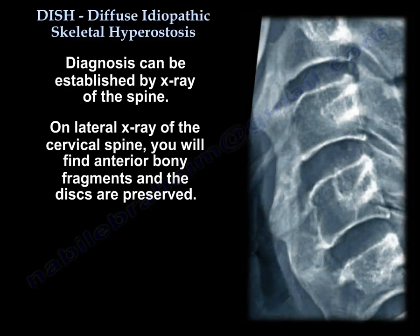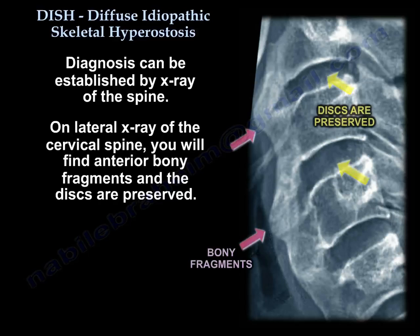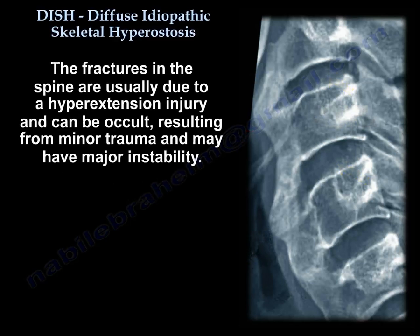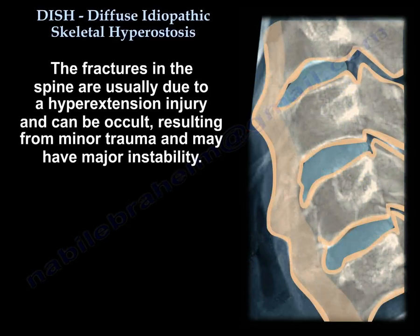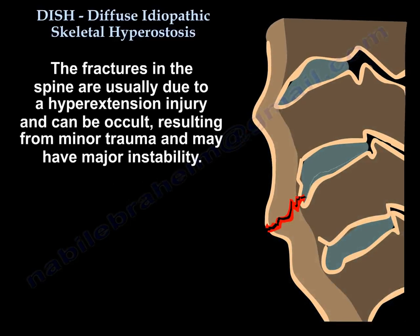Diagnosis can be established by X-ray of the spine. On the lateral X-ray of the C-spine, you will find anterior bony fragments and the discs are preserved. Fractures in the spine, usually hyperextension injuries, can be occult, typically result from minor trauma, and may cause major spinal instability.